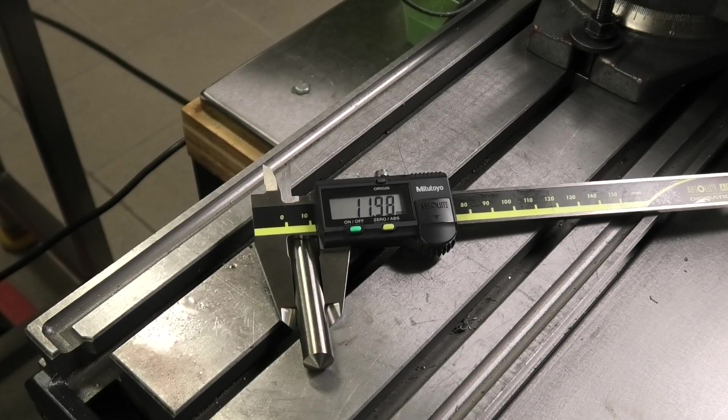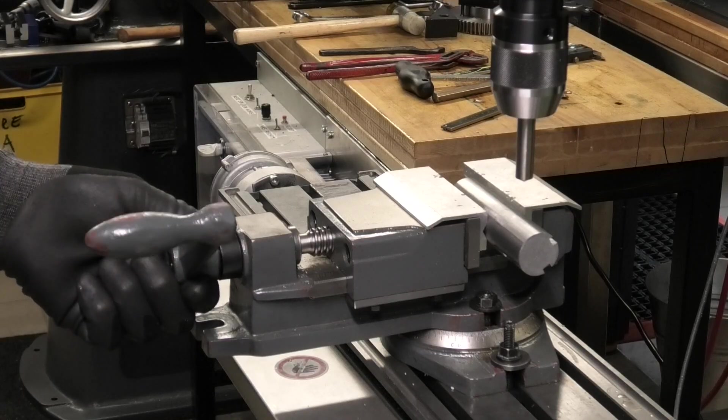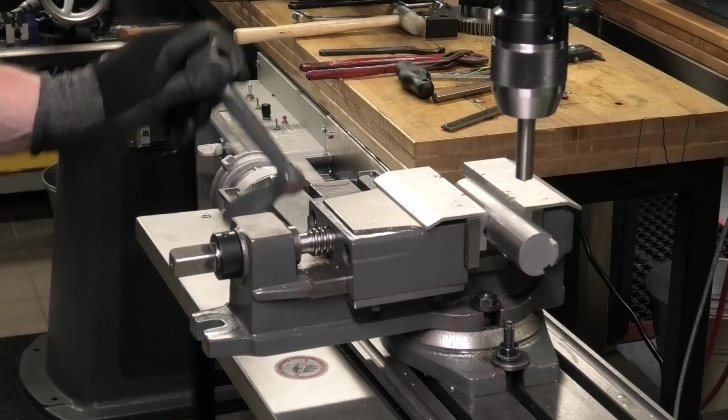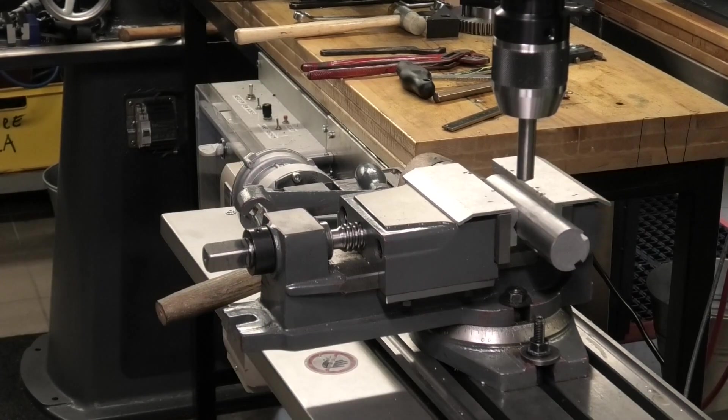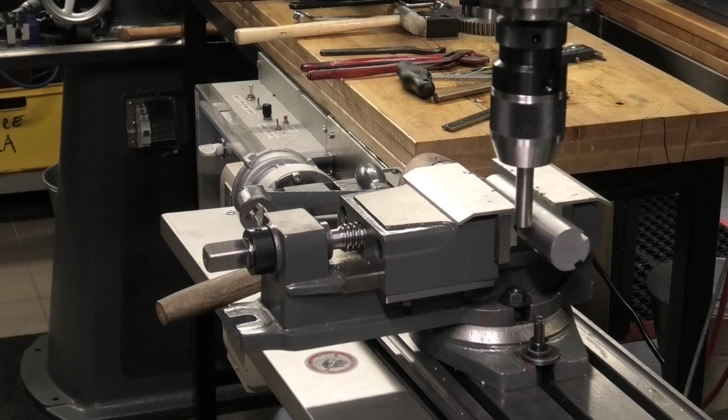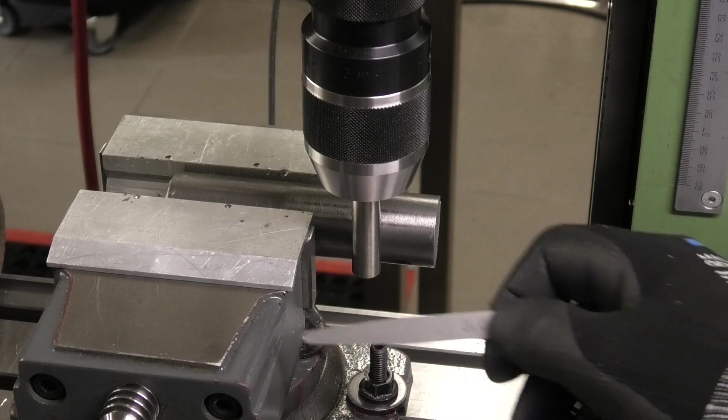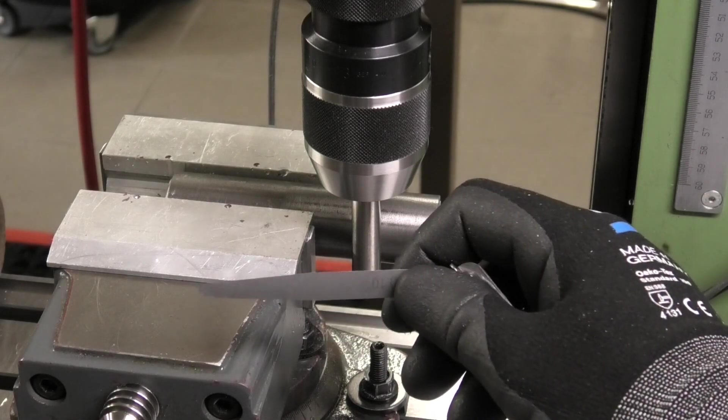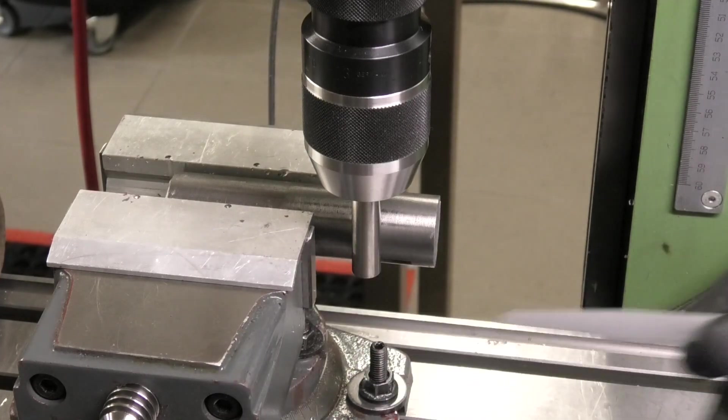With a test pin, here 12mm, we will find the middle of the shaft. Now move the table in the y direction towards the shaft until a feeler gauge, here 0.1mm, fits nicely.